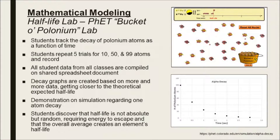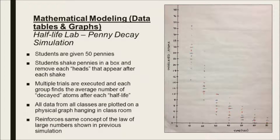We do two half-life labs that yield mathematical models and lessons about large data sets. The first uses a simulation that decays at a certain rate randomly — one trial rarely meets the theoretical half-life, but as students create more trials and we compile all classes' data, the graph gets closer and closer to the theoretical expectation. The second lab involves pennies: students shake them in a box and those that come up heads are considered decayed. They physically plot data points on the same graph, and again, the more data collected, the closer the results approach the theoretical expectation. This is a very important concept: more data yields more accurate results.